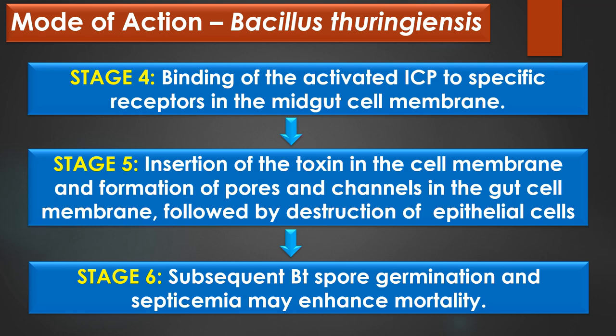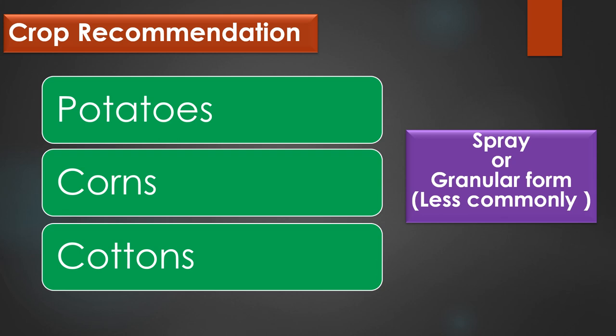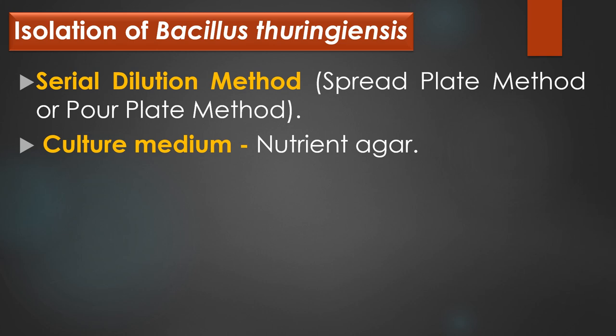Crop recommendations: with Bacillus thuringiensis pesticide, a routine test is required to ensure that unwanted toxins and microbes are not present. Bacillus thuringiensis has been registered for use in pesticides by the U.S. Environmental Protection Agency or EPA since 1961. Bacillus thuringiensis toxin can be applied to crops including potatoes, corn and cotton as a spray or less commonly in granular form. The Bacillus thuringiensis are isolated from soil samples by a serial dilution method, either spread plate method or pour plate method. The common culture medium used for isolation is nutrient agar.